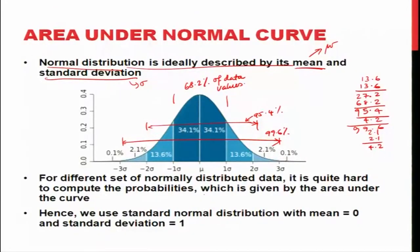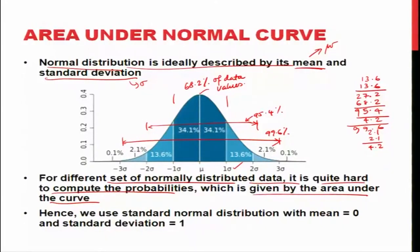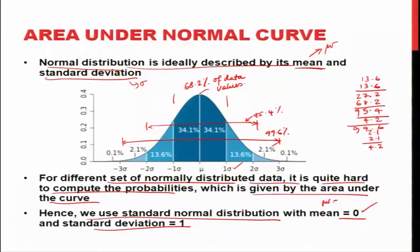The issue is that each data set has its own mean and standard deviation, making it hard to compute probabilities for different normally distributed data sets. To avoid redrawing the curve for every new mean and standard deviation, we use a standard normal distribution with mean of 0 and standard deviation of 1, denoted as Z, where Z ~ Normal(0, 1).